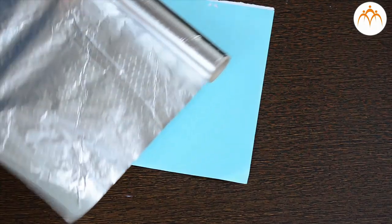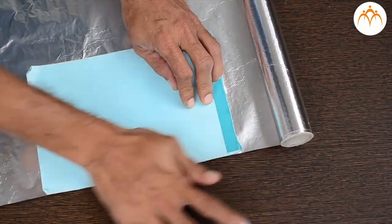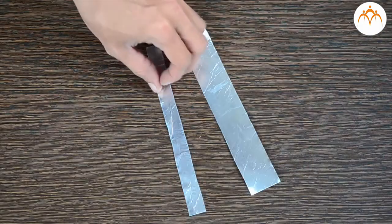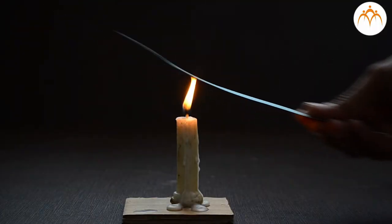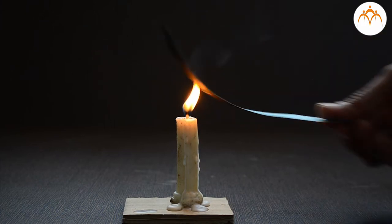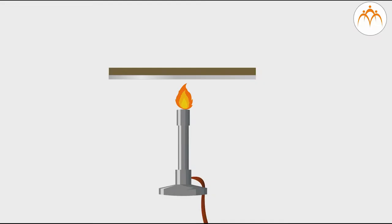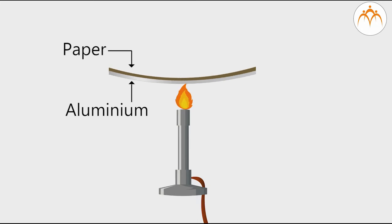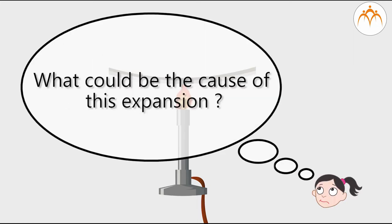This is the aluminum foil pasted to the paper. If I heat this strip, it will bend in one direction. Amount of expansion for aluminum is different than that of paper. What could be the cause of this expansion?